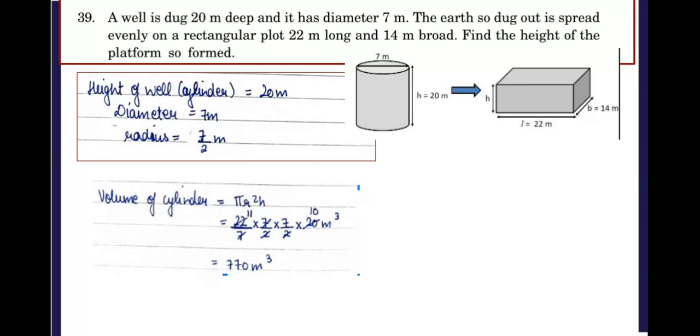Now we will be finding the volume of the right circular cylinder which is π r² h. So we can simplify: 22 by 7 into r is 7 by 2, so 7 by 2 into 7 by 2 into h, h is 20. So you can simplify this and we get volume of the cylinder as 770 cubic meters.